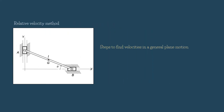We are going to solve this problem using two different methods. The first one is the relative velocity method. Step one: locate the point whose velocity and direction are known. In our case, the velocity and direction of slider A is given, which is 5 meters per second downward. Step two: locate the point whose direction is known. In this problem, we know that slider B will move to the right. We don't know the magnitude, but the direction is known.